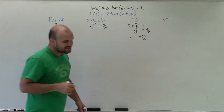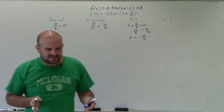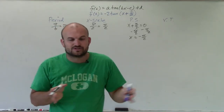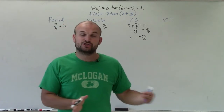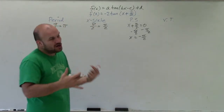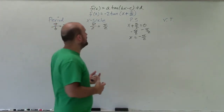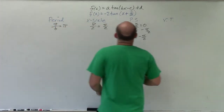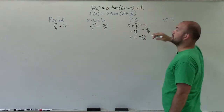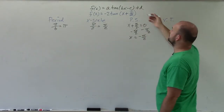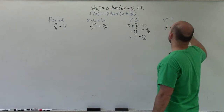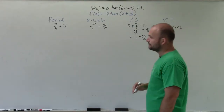The phase shift tells you from the initial period where the graph is going to shift — I usually like to start at my phase shift. The vertical transformation is your d value, which shifts the graph up or down, and in this case we do not have one.